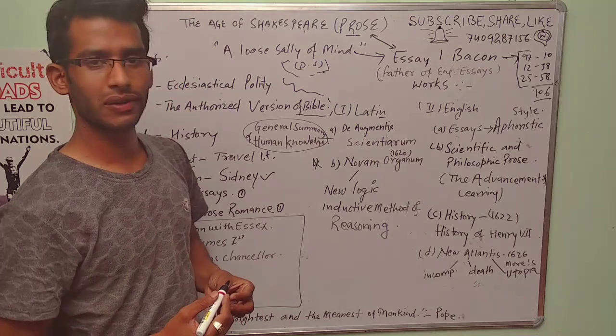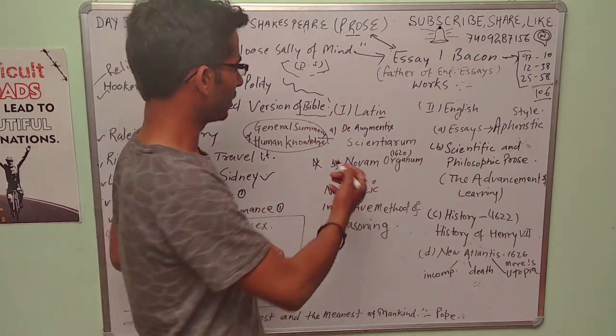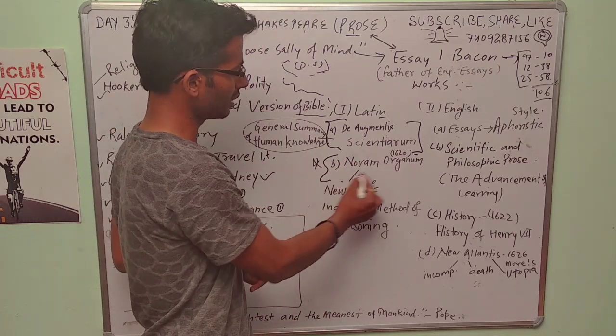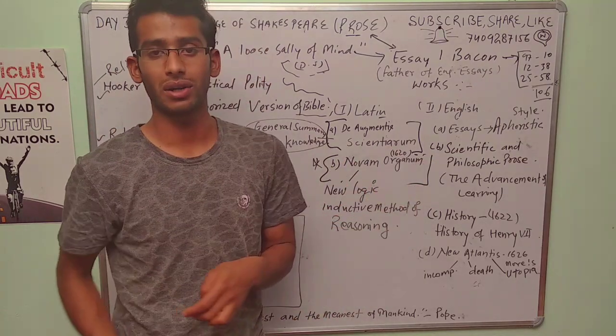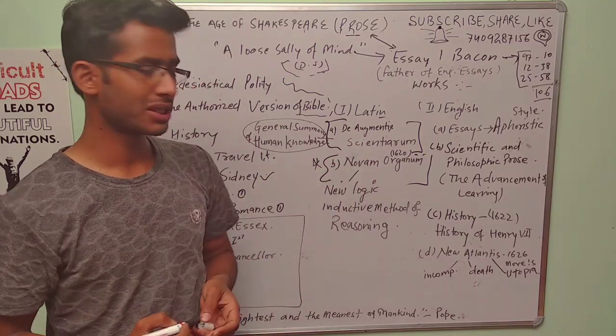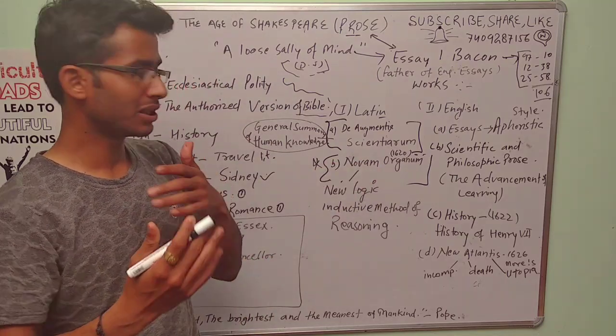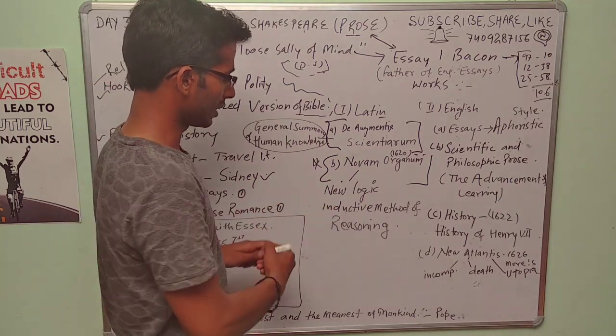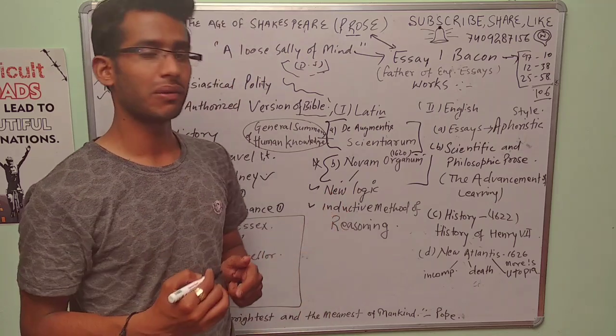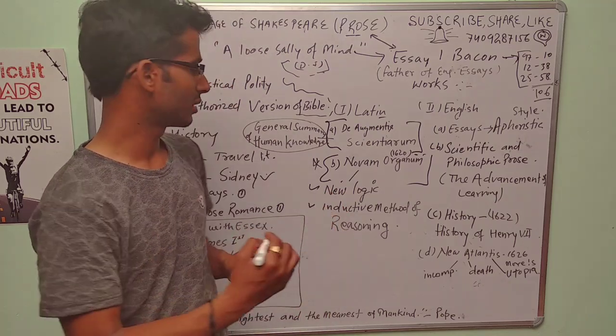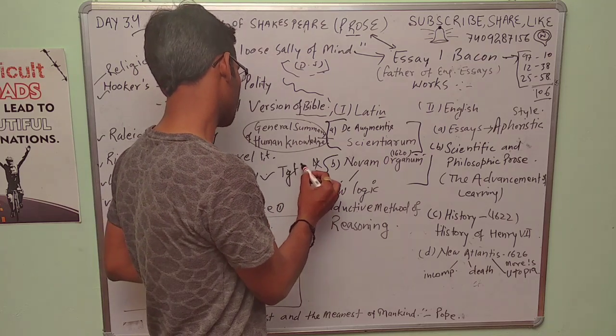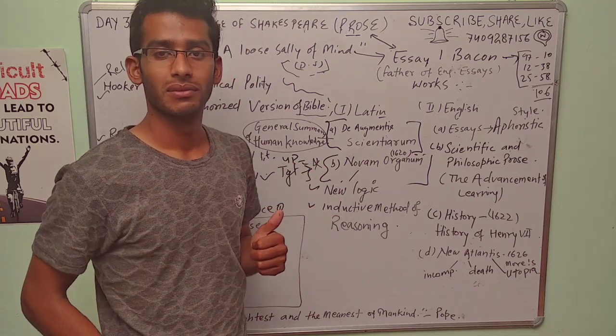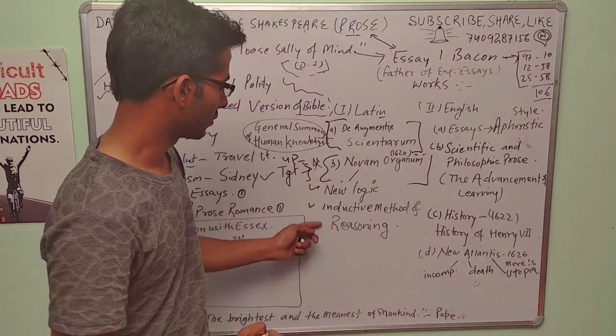He knew Latin. In Latin we have The Augmentis—scientific realm—and the next one, which is important, is Novum Organum. Novum Organum got published in 1620 and the subject matter of this work was new logic and inductive method of reasoning. This is sometimes asked in TGT, as it was asked in UPTGT—what was the subject matter?